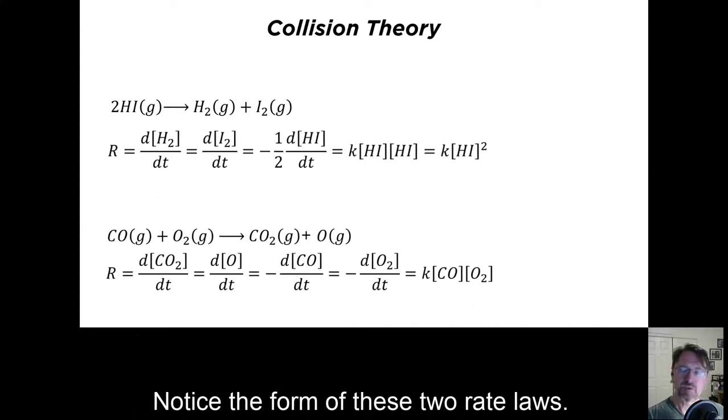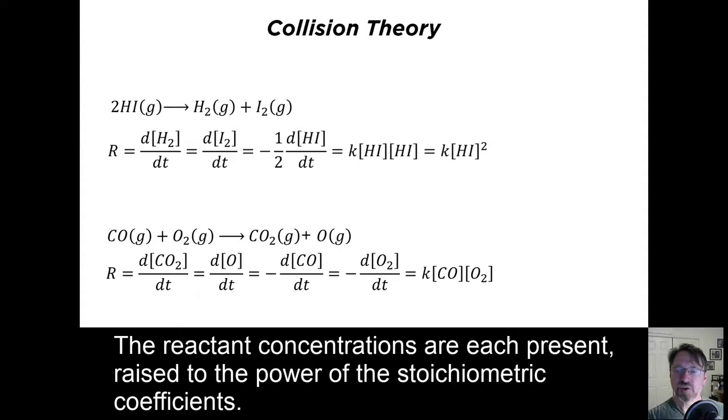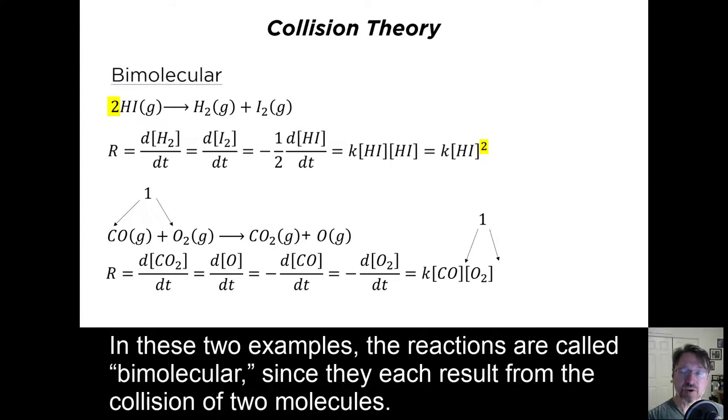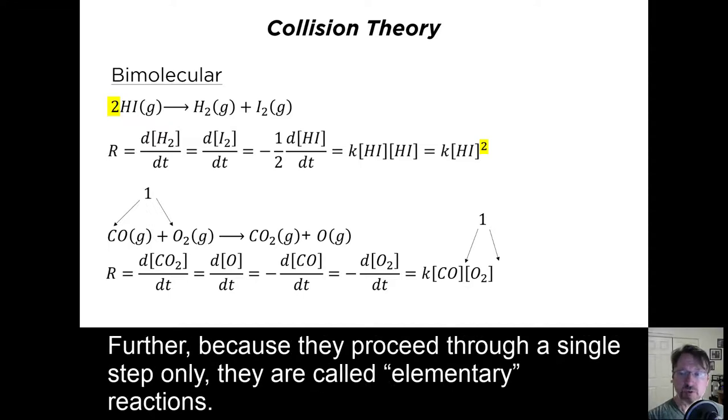Notice the form of these two rate laws. The reactant concentrations are each present raised to the power of the stoichiometric coefficients. This is a general feature for reactions that happen through a single collision. In these two examples, the reactions are called bimolecular, since they each result from the collision of two molecules. Further, because they proceed through a single step only, they are called elementary reactions.